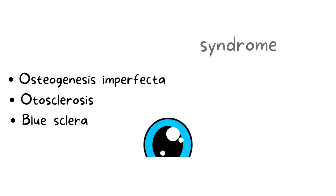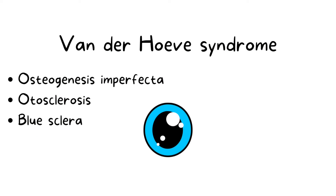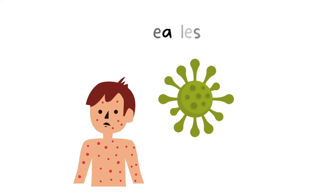It is found to be associated with a syndrome called van der Hoeve syndrome, where it is found along with osteogenesis imperfecta and the patients have a blue sclera in the eye. Genes encoding type 1 collagen are involved in this condition.